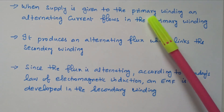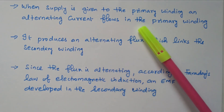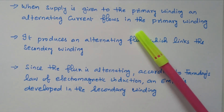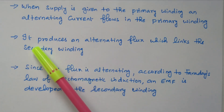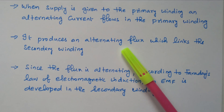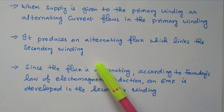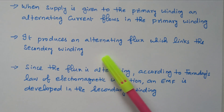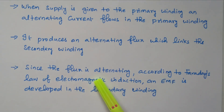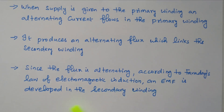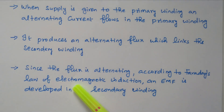When supply is given to the primary winding, an alternating current flows in it, producing alternating flux. This flux links with the secondary winding through the iron core. Since the flux is alternating, according to Faraday's law of electromagnetic induction, an EMF is induced in the secondary winding. Due to the rate of change of flux, the EMF is induced in the secondary winding — this is the basic principle of the transformer.